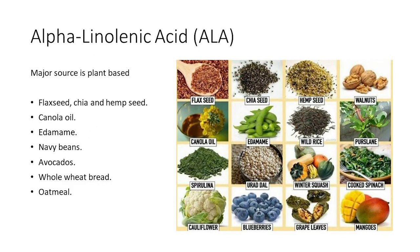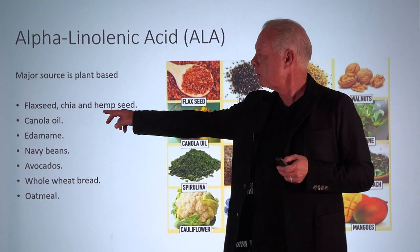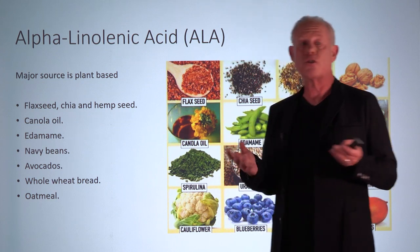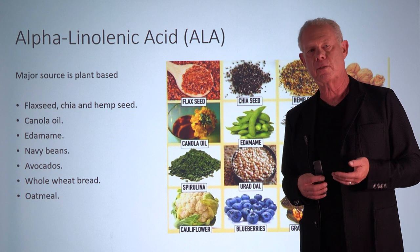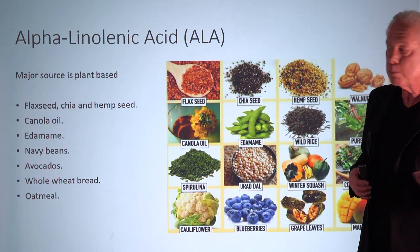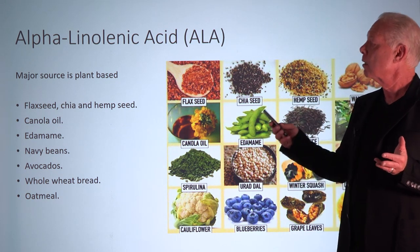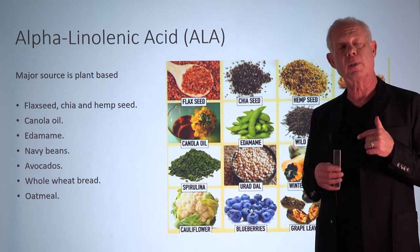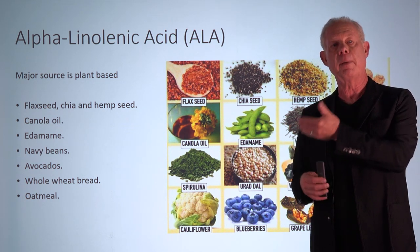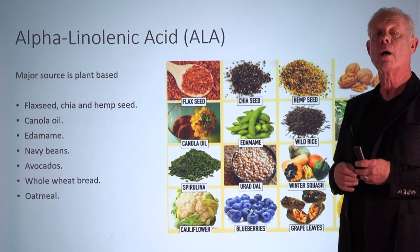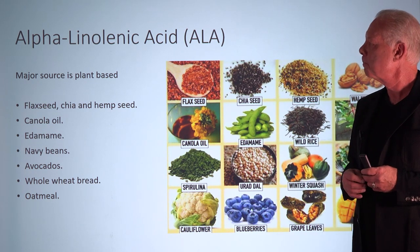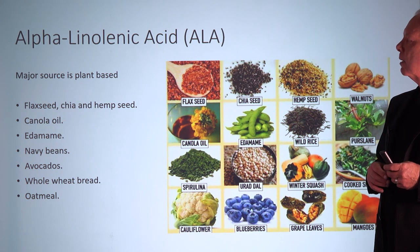Alpha-linolenic acid is plant-based — that's where we get it. Most people are already using flaxseed, chia, and hemp seed, putting them in yogurts, cereal, or smoothies. Canola oil — which we talked about from Sweden's dietary makeover in the blue zones — was invented there and is very rich in monounsaturated fatty acids, but it also has ALA.